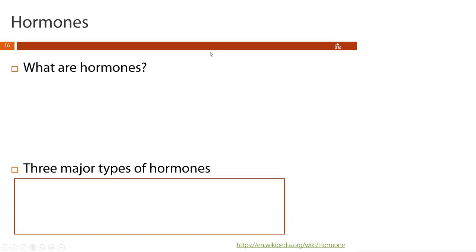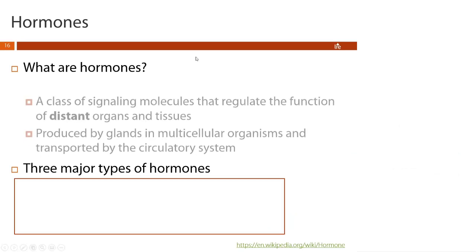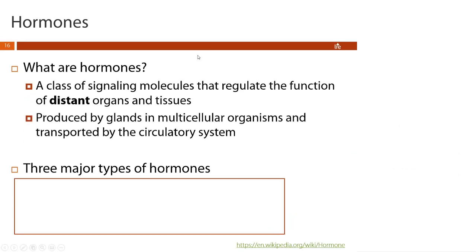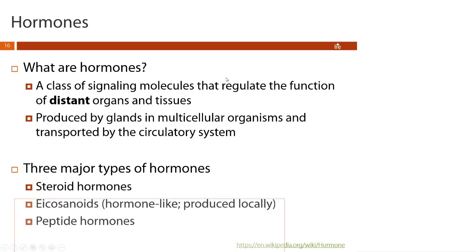Our last group of steroids are hormones. A hormone is a class of signaling molecule that regulates the function of distant organs and tissues, meaning the area of the body where they are produced is separate from the area they regulate, so they have to be transported via the circulatory system. We can break hormones down into three major types: steroid hormones, eicosanoids, and peptide hormones, which we'll touch on when we get to our proteins chapter.